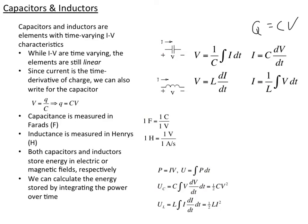We do the same thing for the inductor, where we start with I and replace V with L·dI/dt to get a similar expression. The energy stored in an inductor in the magnetic field is one-half L times I squared.